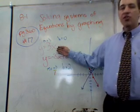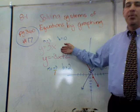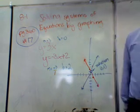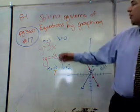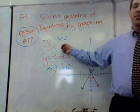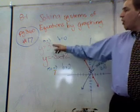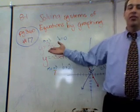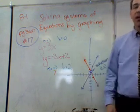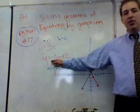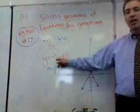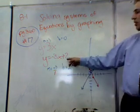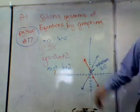In y equals 3x, there's no number here where the b would normally be. But it shouldn't bother you. That just means that b equals 0. There is no number. There is no value for the y-intercept. It means it's at 0. The slope is 3 because y equals 3x. M x plus b. The m is 3. In this more standard-looking one, y equals negative 3x plus 2, it's pretty obvious that m is negative 3, which is actually negative 3 over 1, and b is equal to 2. Just line them up, and there you go.